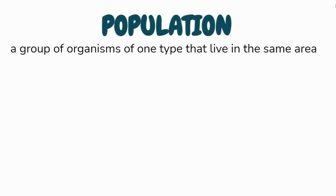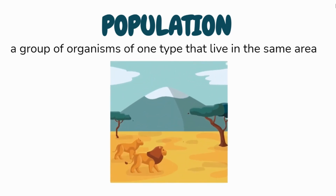Population is a group of organisms of one type that live in the same area. For example, a pride of lions in Kenya, Africa, is a population.